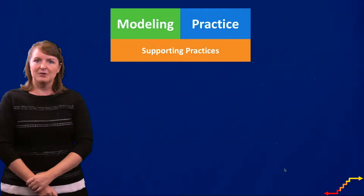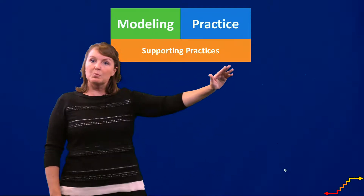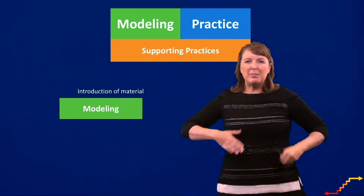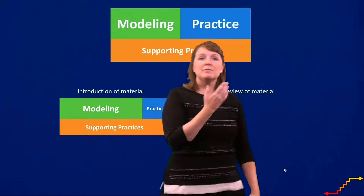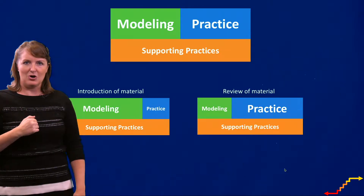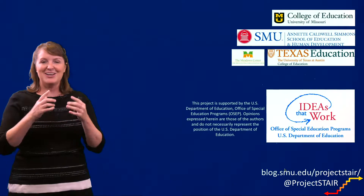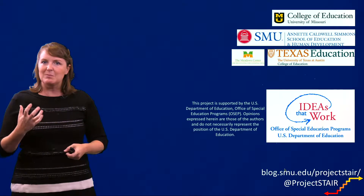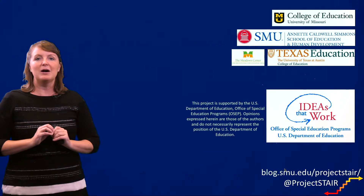When we talk about this model of explicit instruction, I showed it as roughly a 50-50 relationship — about 50% modeling and 50% practice — with supporting practices always in play. But that's not always how it works. When introducing something new, you'll probably do a lot of modeling and just a little practice. When reviewing something, you might do just a little modeling and a lot of practice. In both cases, the supporting practices are always in play. I hope you'll think about using all of these components of explicit instruction — good modeling, really awesome practice opportunities, and those supporting practices — in your teaching.